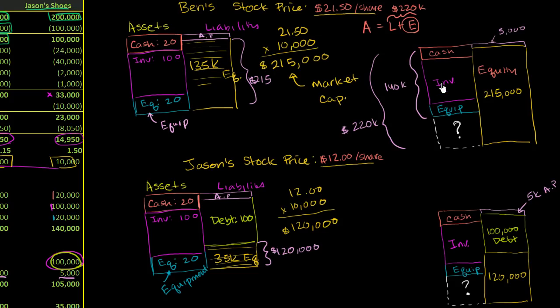And let's assume that Ben has actually done a good job of stating the market value of his inventory and the market value of his equipment. Well, what the market's saying in this situation, and this is actually what tends to happen, is that the market value, or in general, the market value of a company's equity tends to be higher than the book values.